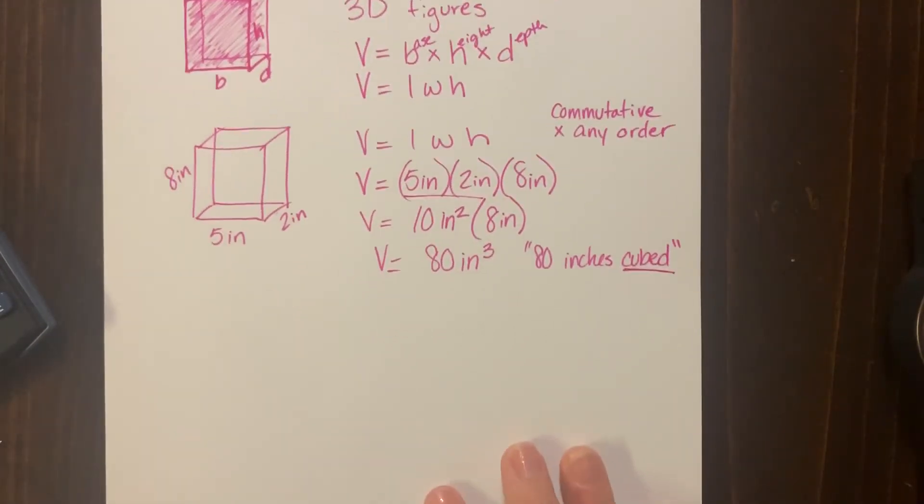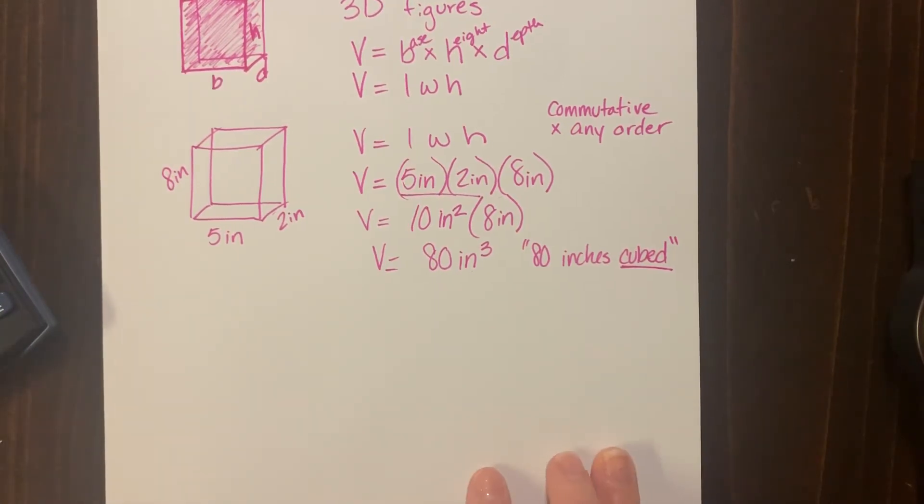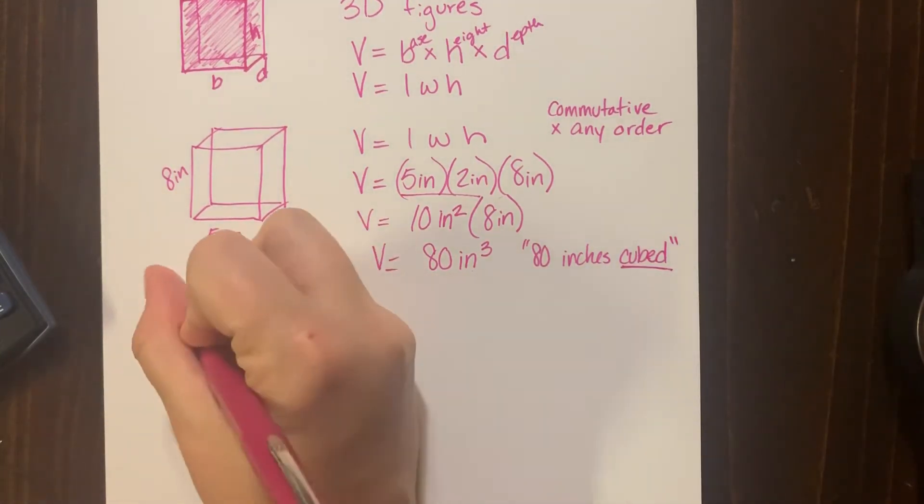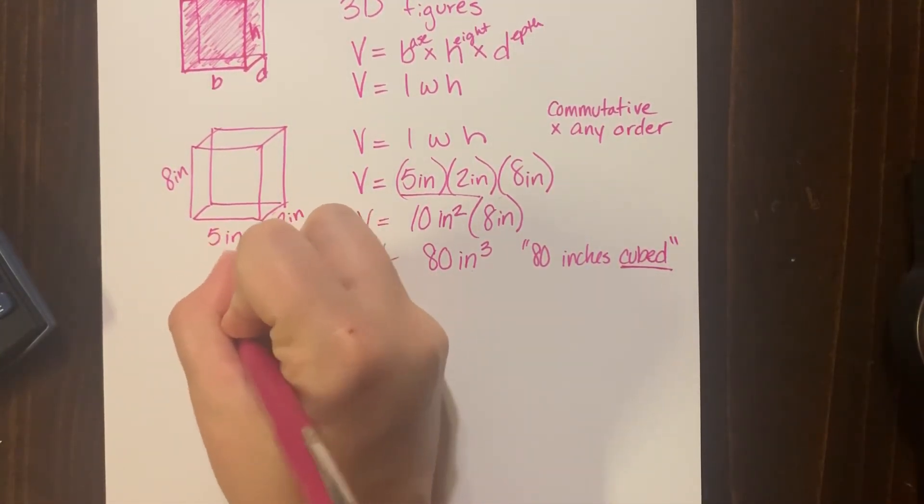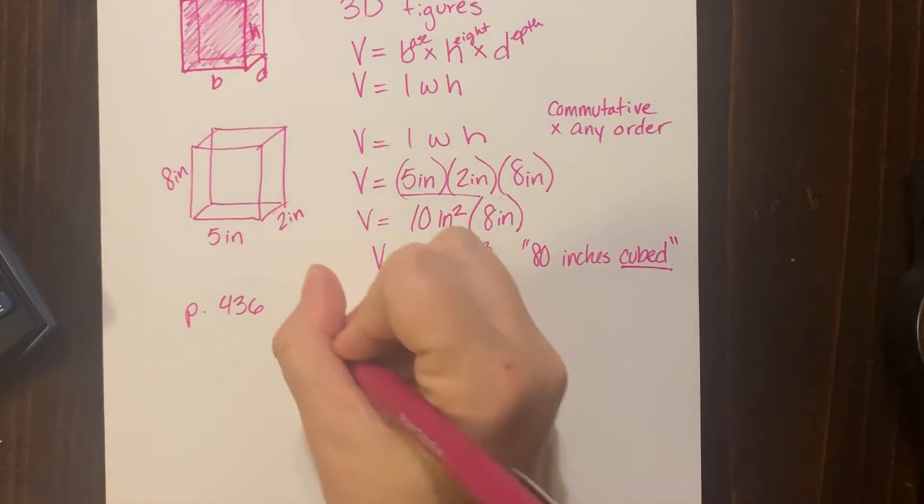All right, let's look at one that's in your book that has fractions in mind, because for some reason they think they're going to trick you with fractions, which that's just silly because you guys know how to multiply fractions. All right, the very first one on page 436, it's the try it.